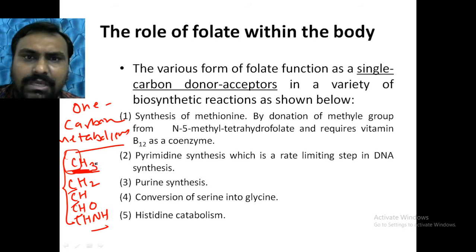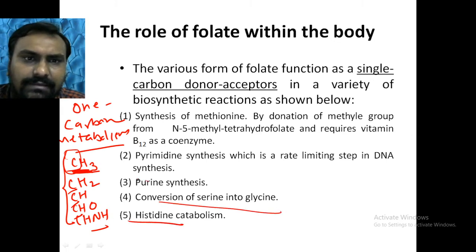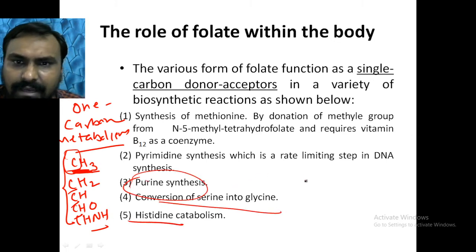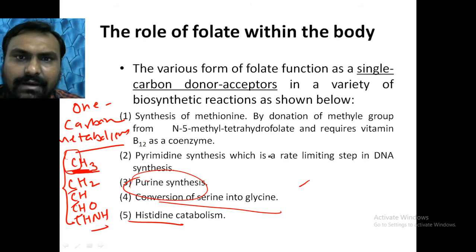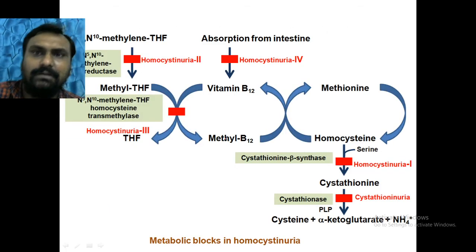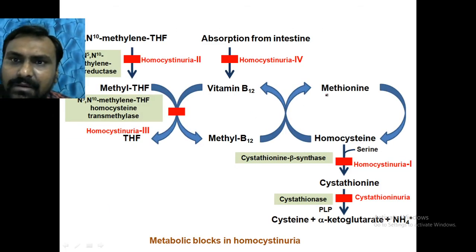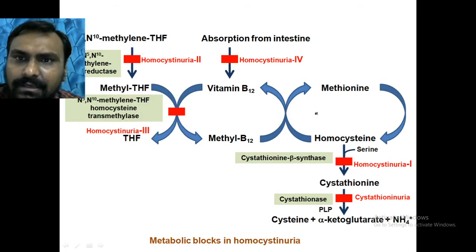Folic acid is also important for the C2 and C8 positions of the purine ring, and for the formation of dTMP from dUMP, it requires folic acid. So it is important in histidine metabolism, conversion of serine to glycine, purine C2 and C8 ring synthesis, and in methionine metabolism — folic acid plays a crucial role.